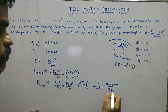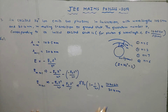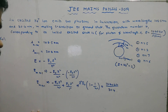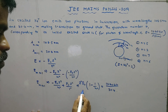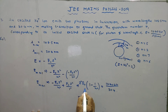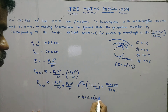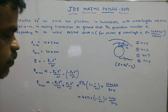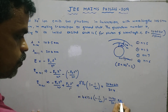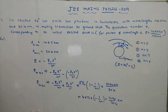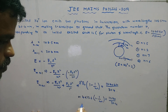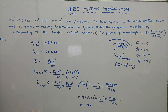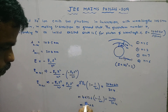The photon energy is 1240 divided by 30.4 nanometer, in electron volts. So E-naught Z-squared equals 4 times 13.6, giving us 13.6 times 4 times (1 minus 1/m²) equals 1240 divided by 30.4 electron volts. Solving this formula, we get m equal to 2.